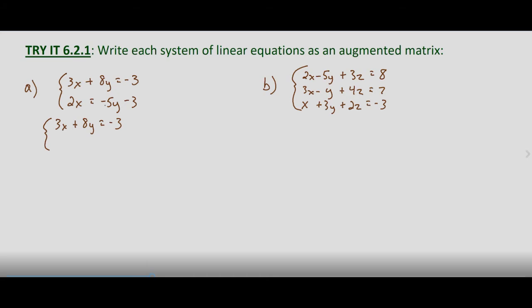But with the second equation, we need the negative 5y over on the left-hand side, so we add 5y to both sides, which gives us 2x plus 5y equals negative 3.